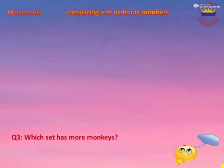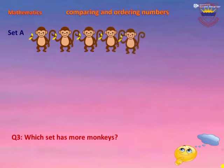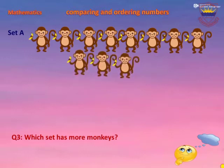Question 3: Which set has more monkeys? In Set A there are some monkeys. Let's count: one, two, three, four, five, six, seven, eight, nine, ten, eleven, twelve. In Set A there are 12 monkeys.